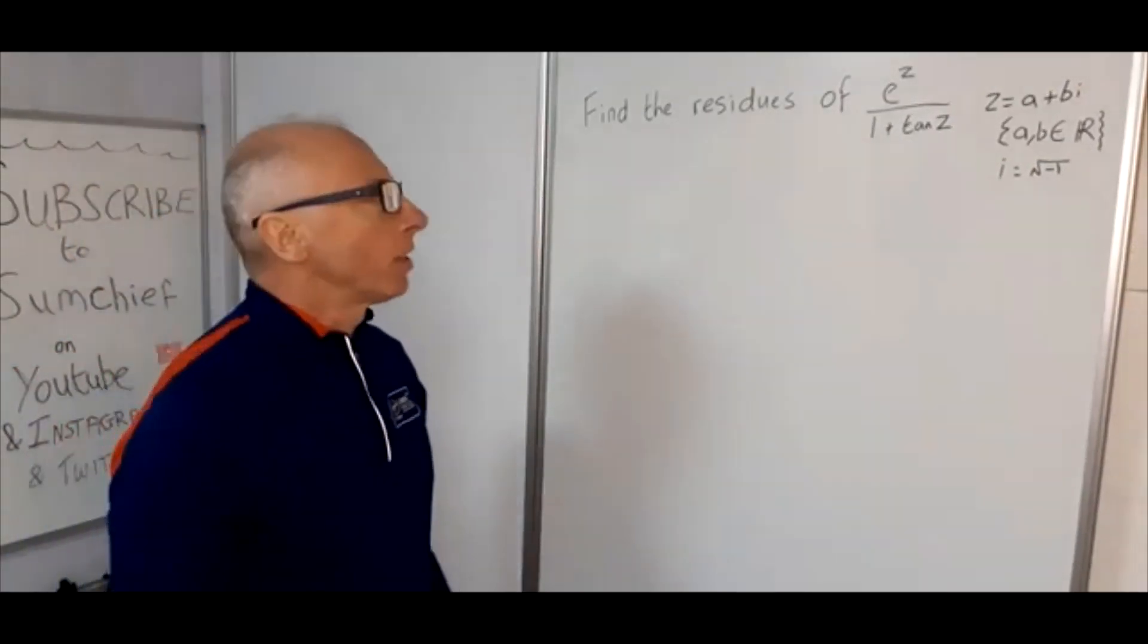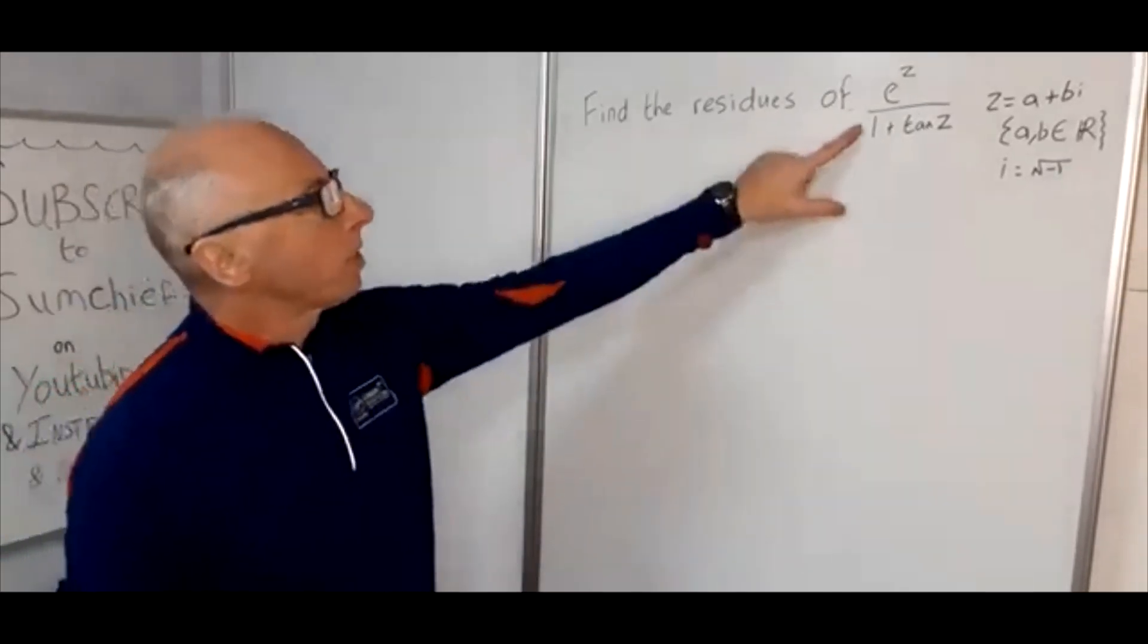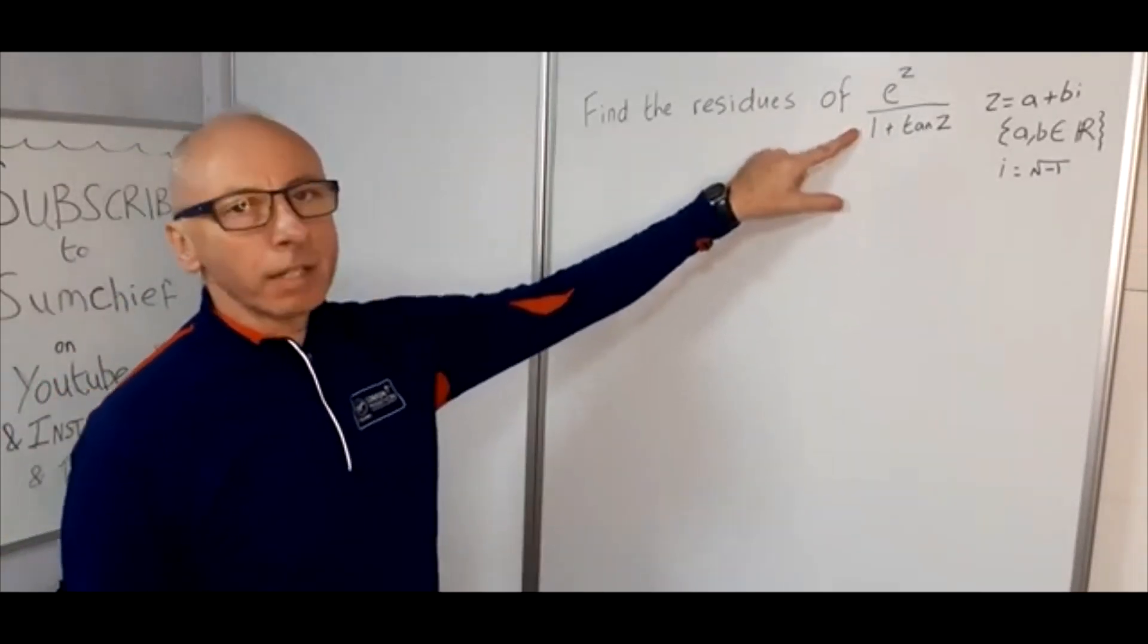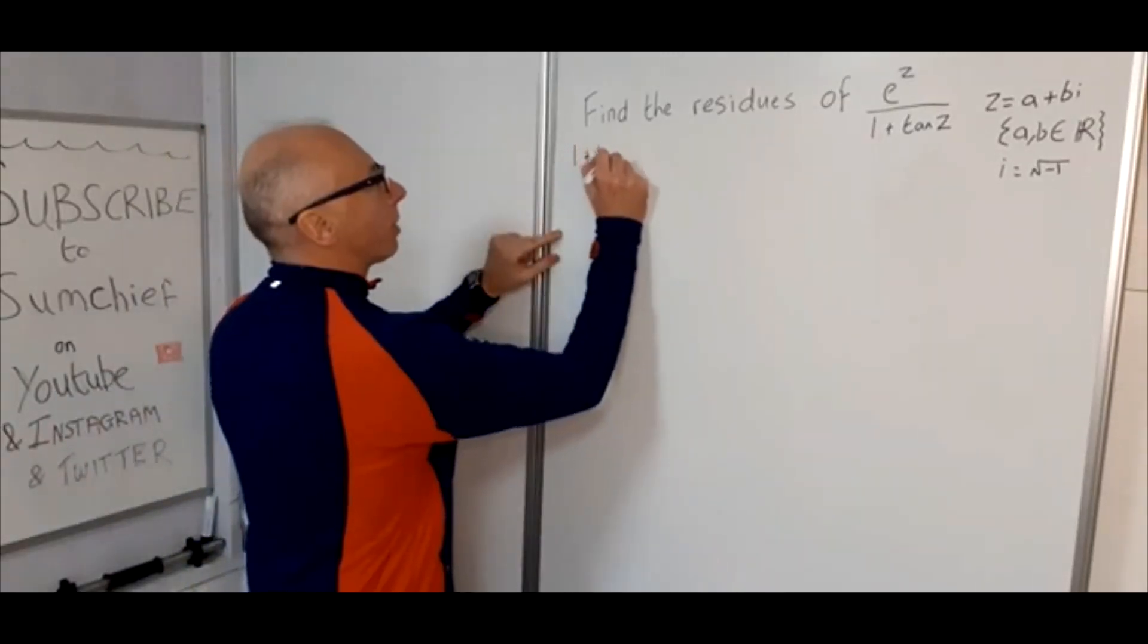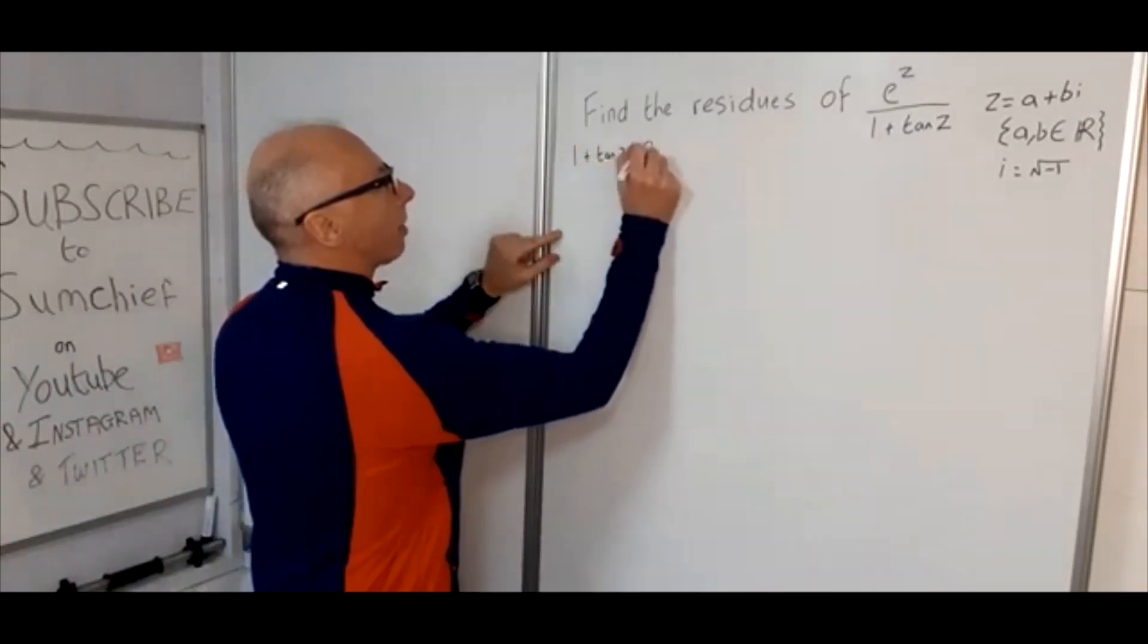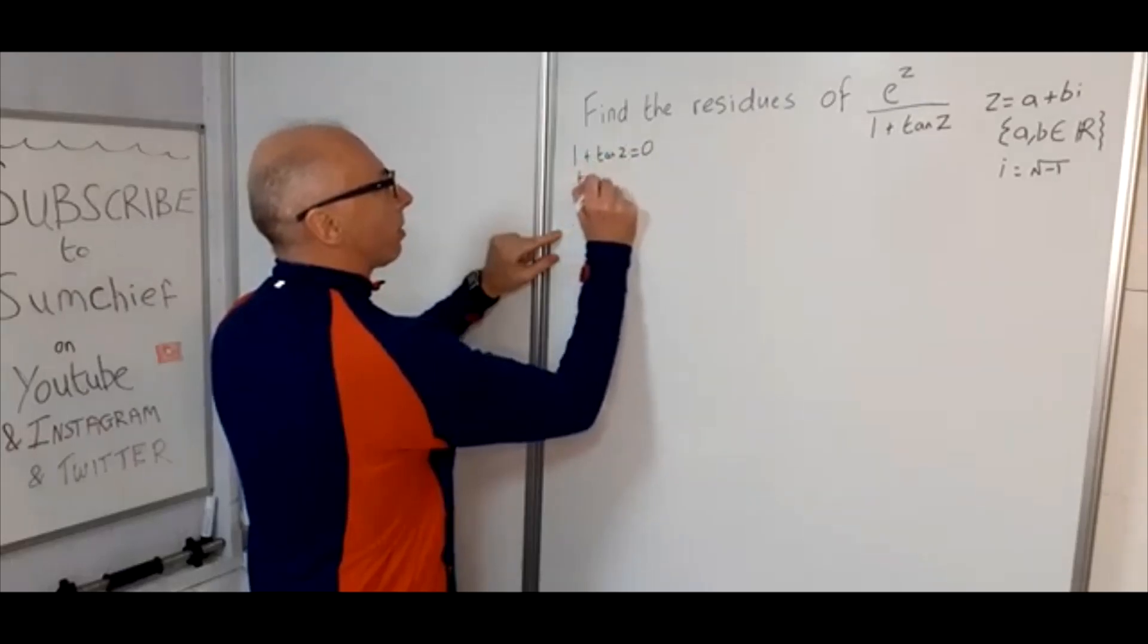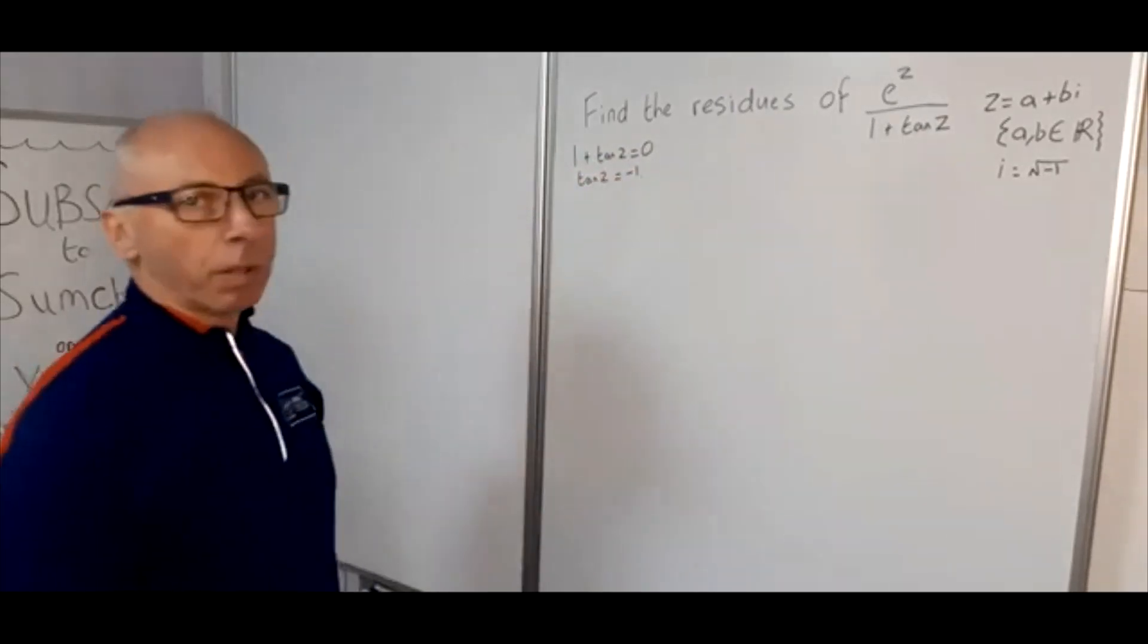Okay, so finding the residues. Normal business: first of all, we need to find where the denominator is 0. So what we need first is 1 plus tan(z) equals 0, which then leads us to tan(z) equals minus 1.